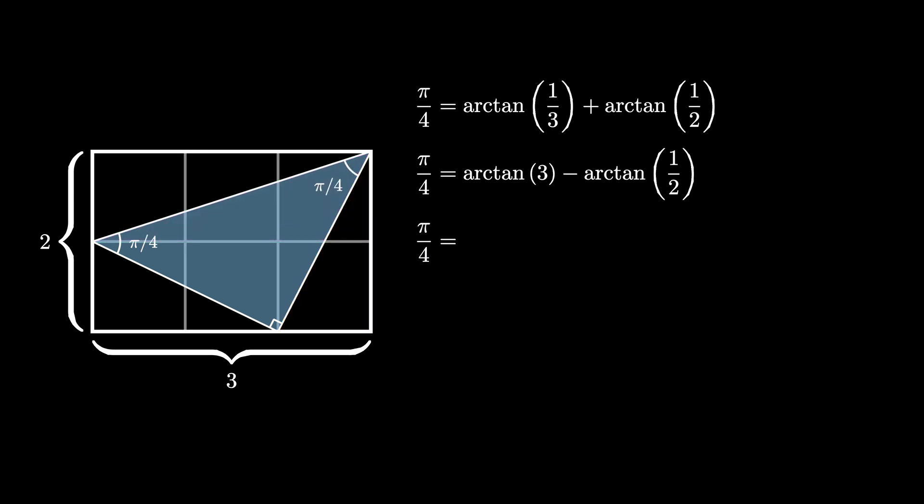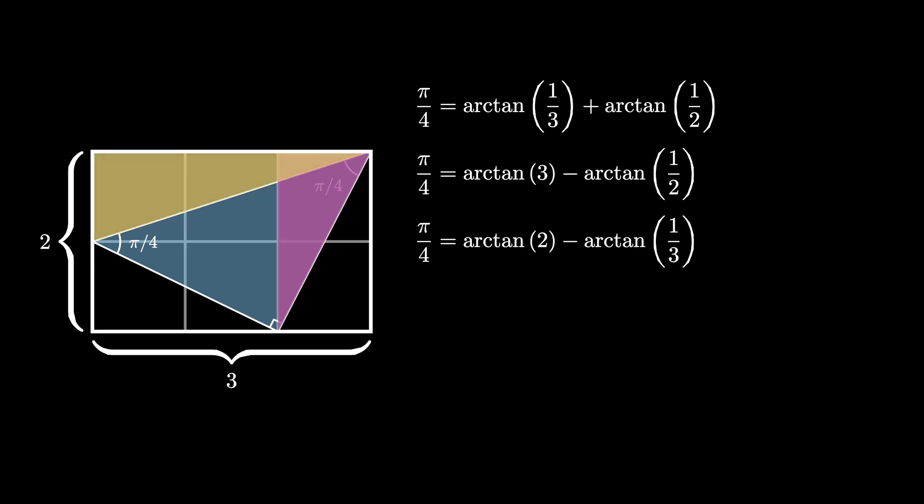Another way to get pi over 4 in this case is as the difference of two angles in these triangles, one with an angle measurement of arctangent 2, and the other one with an angle measurement of arctangent 1 third.